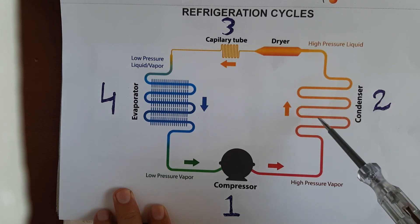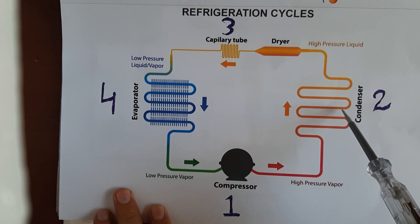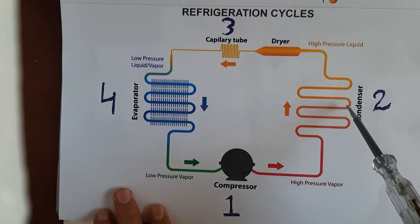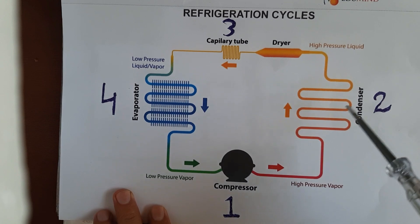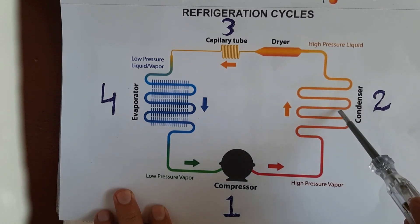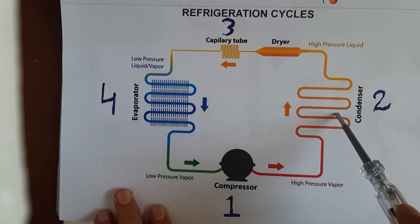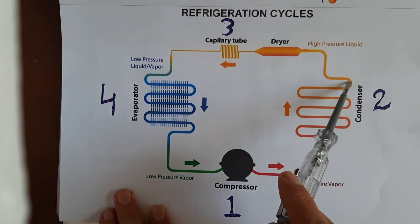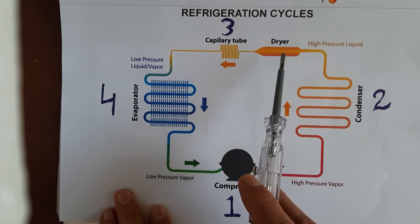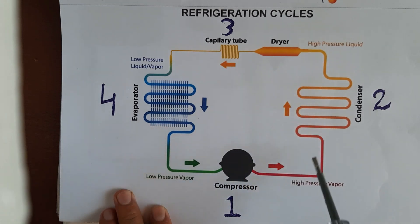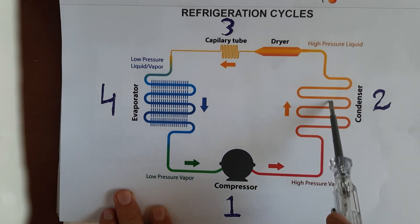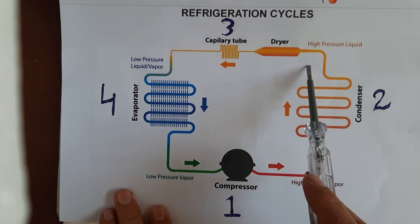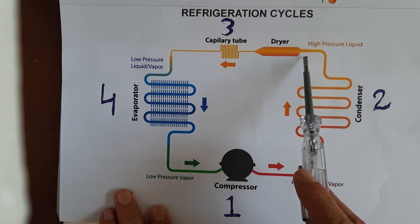In a refrigerator, the condenser removes heat by normal air. In refrigeration systems like chillers, freezers, under-counter units, cold rooms, and AC, you will see a condenser fan that removes the heat. In bigger chillers and central AC, you will see an air-cooled condenser, and in a cooling tower the condenser heat is removed by cold water.